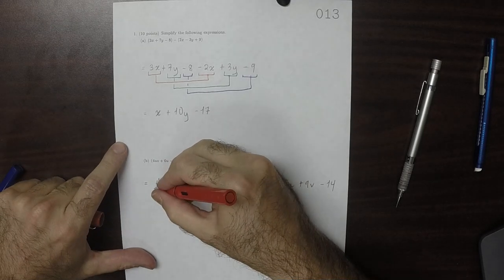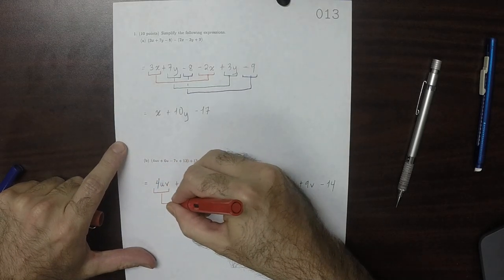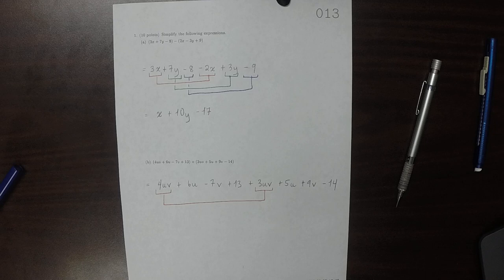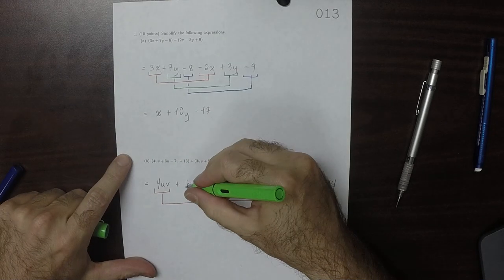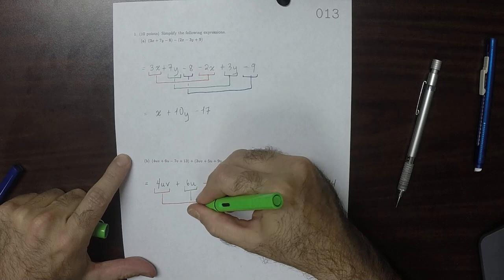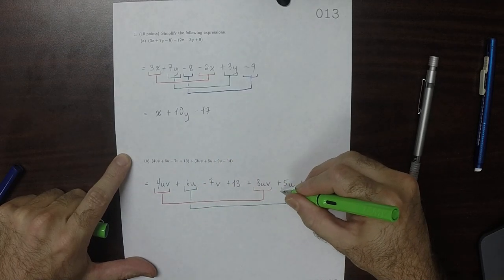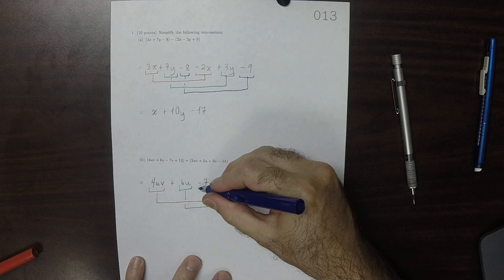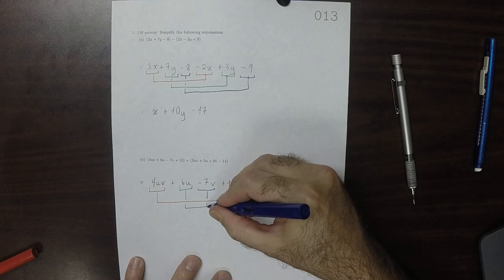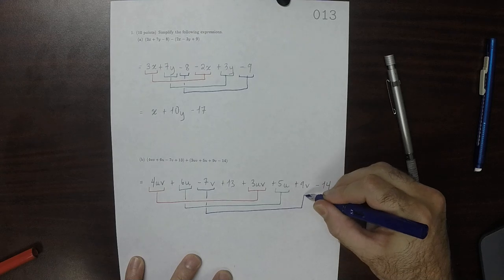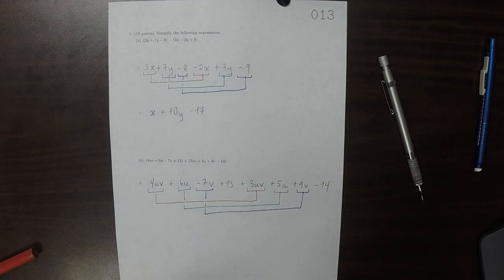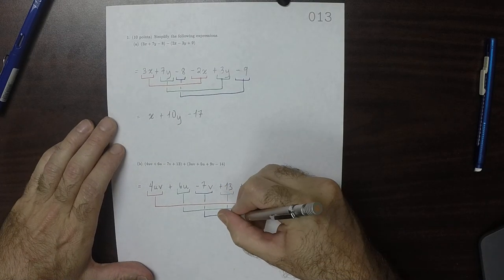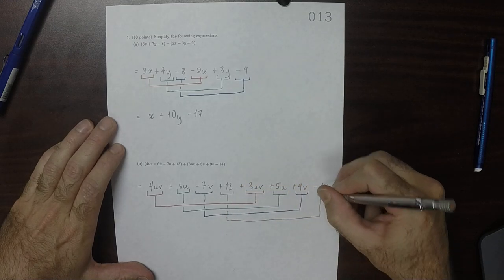Again, let's make groups. So the stuff that has a u and also a v, those are the same kind of thing. Things with just a u, those are the same kind of thing. Things with just a v are the same kind of thing. And the constants are the same kind of thing.